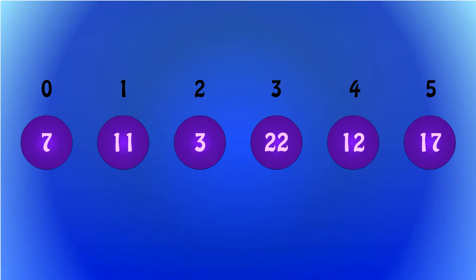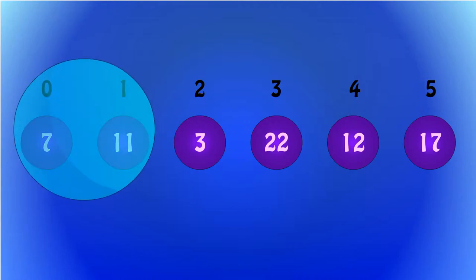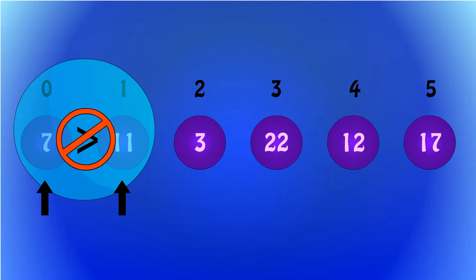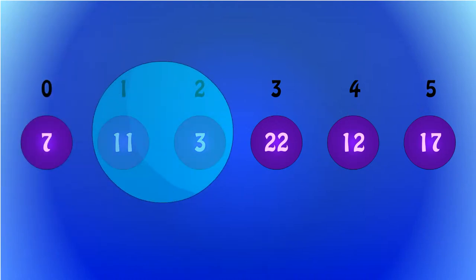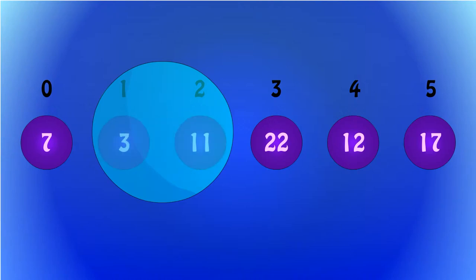Above the numbers are the indices for each element. First, the CPU will check the first two indices in the array. It checks to see if 7 is greater than 11. In this case, 7 is not greater than 11, so the CPU, or bubble, moves on to the next two indices. Now the CPU checks if 11 is greater than 3, so 11 and 3 switch places.